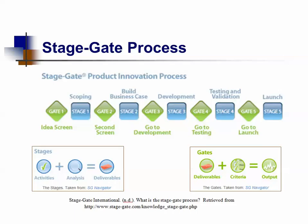Stage four is quality control, wherein testing and validation happens in a laboratory setting to verify and validate the proposed new product, the brand, the marketing plan, production, and operation strategies. The final stage is the launching — what they call commercialization — which is the beginning of full-scale operation, production, marketing, and selling.